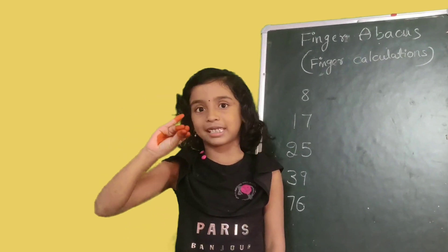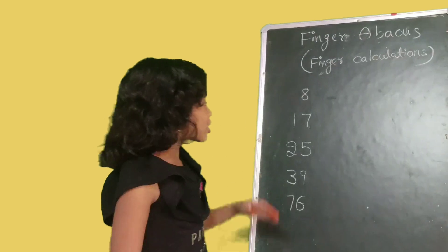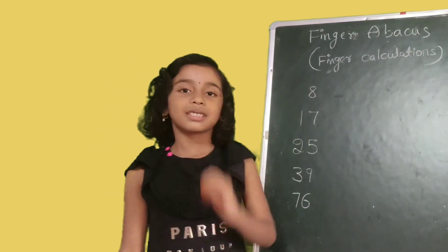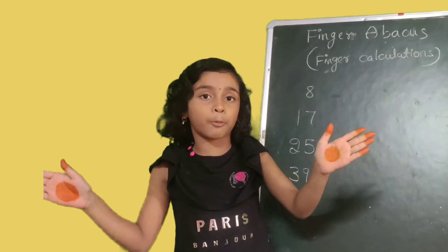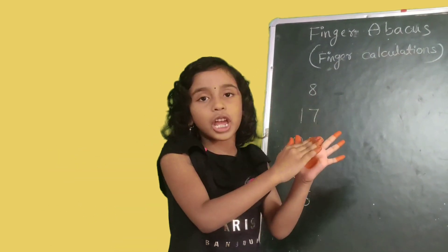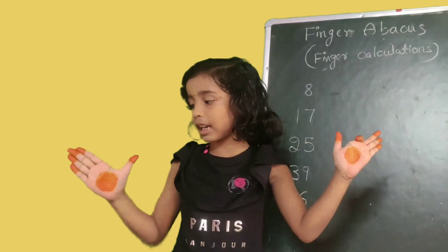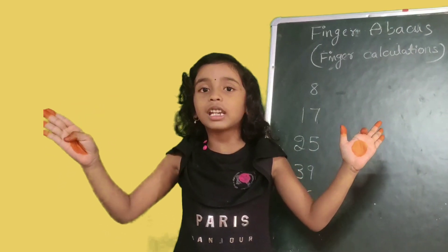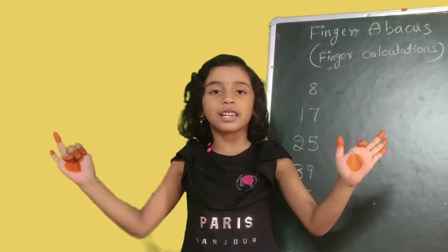Friends, this thumb finger value once. Friends, this number is 7. Friends, this thumb finger value 10. Then close. All again, if I need close, all again, you need close.